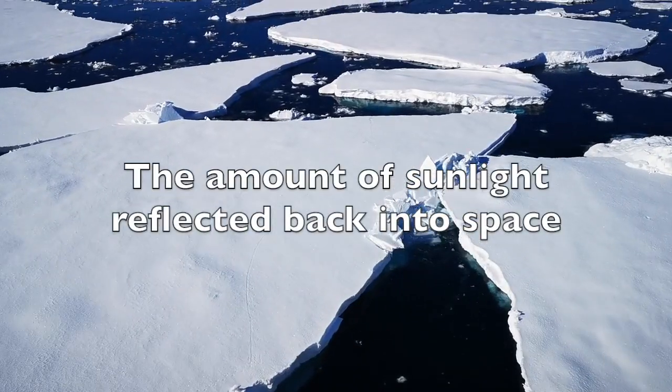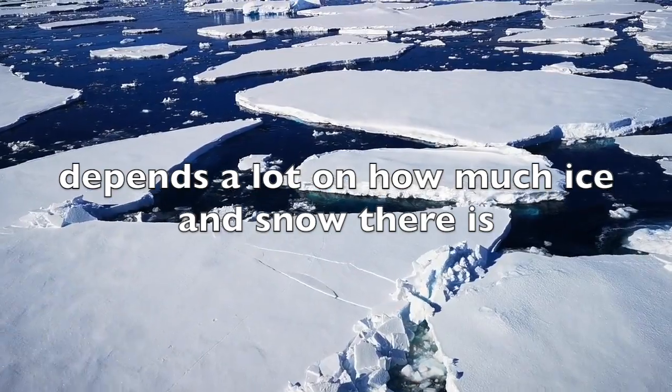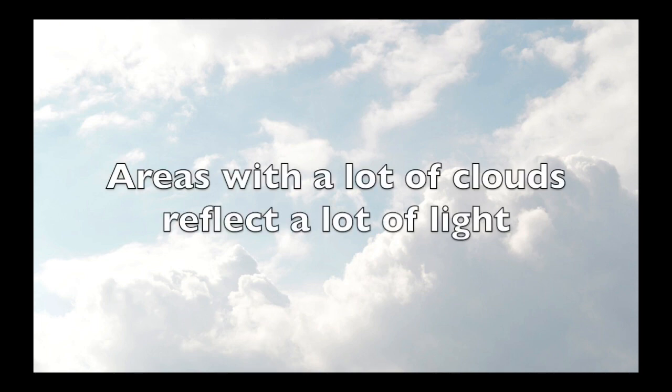The amount of sunlight reflected back into space depends a lot on how much ice and snow there is, as well as how much cloud cover there is, because areas with a lot of clouds reflect a lot of light. This is going to be very important when we talk about feedback loops in a future lesson.